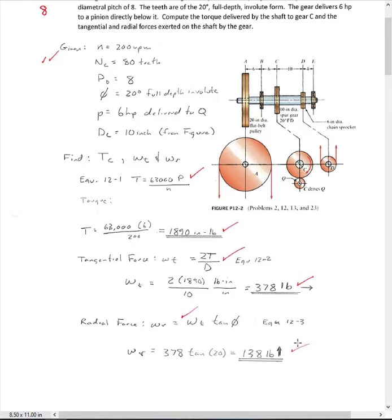Then we're going to calculate our radial force. We're going to use equation 12-3, and our radial force is Wt times tangent phi, and I get 138 pounds. Again, this is the radial force exerted back onto the shaft. So in this case, this is going to be 138 pounds pointing upwards. So we need to know that when we get into the shear and bending moment diagram portions of the problem.